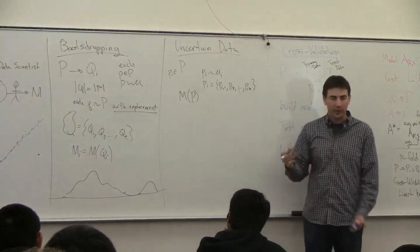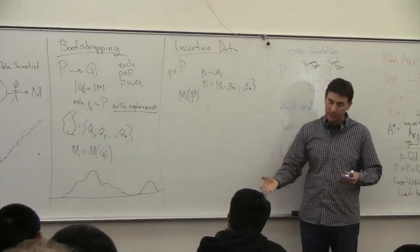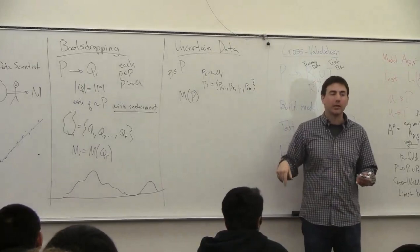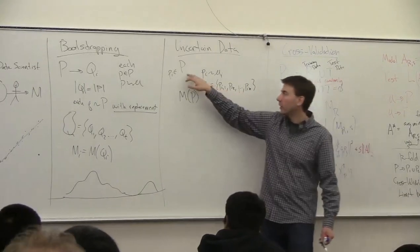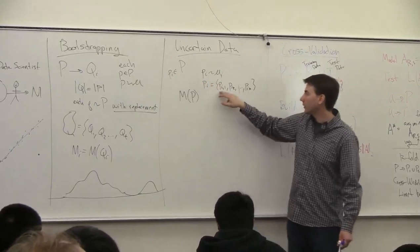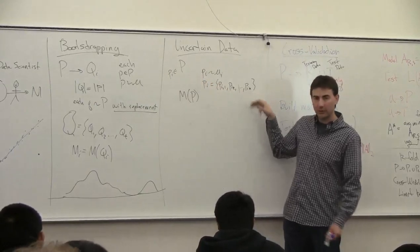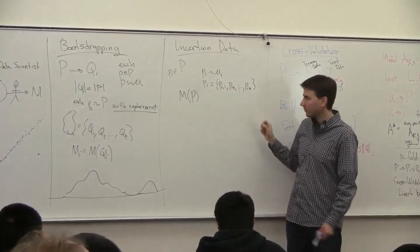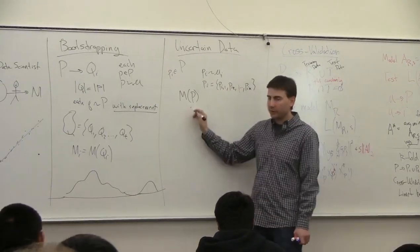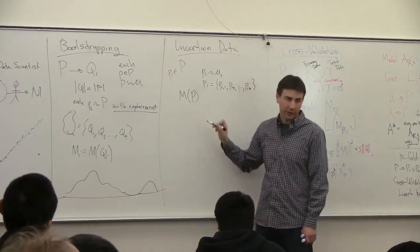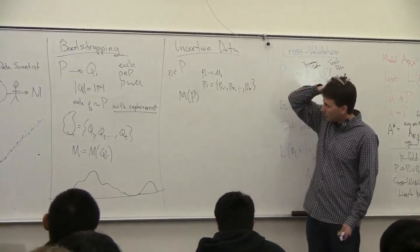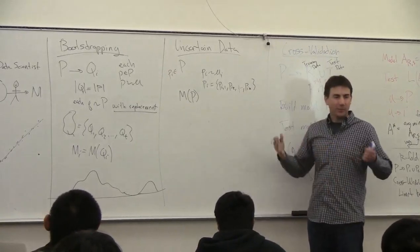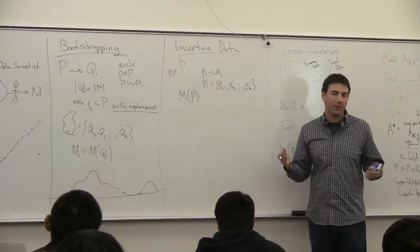So if you have GPS locations of a person, you may have 10 different GPS locations where they've been in the last hour, and this is your data set. So instead of a set of people, you have a set of a set of measurements, so you have a set of sets, and then you want to build a model on this, treating each of these as one location. And so this just becomes a lot more complicated really quickly.